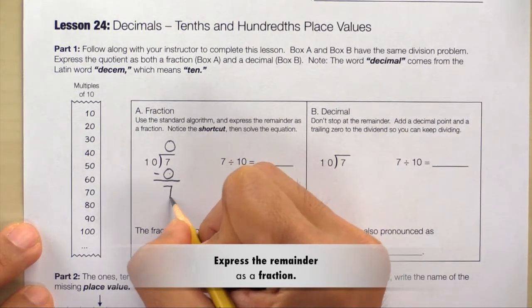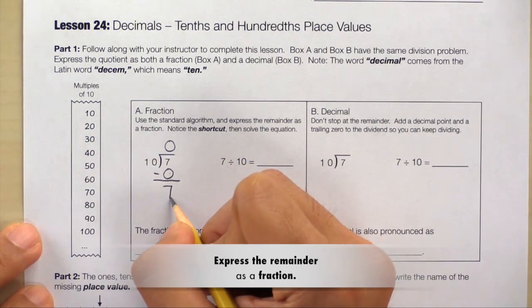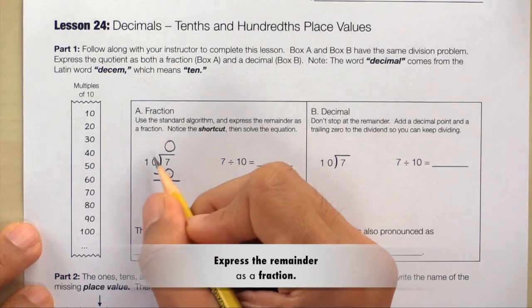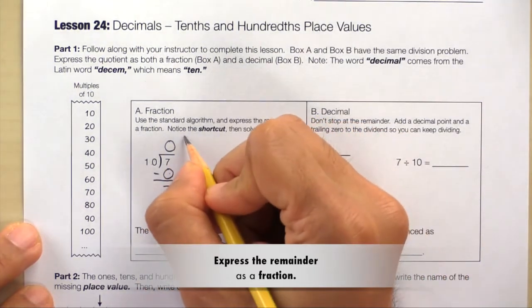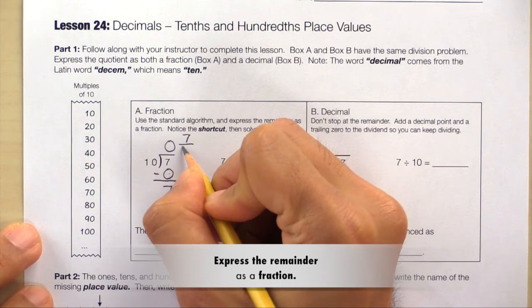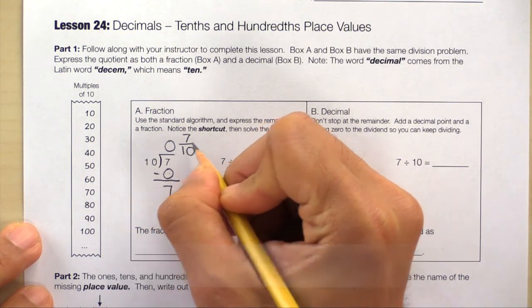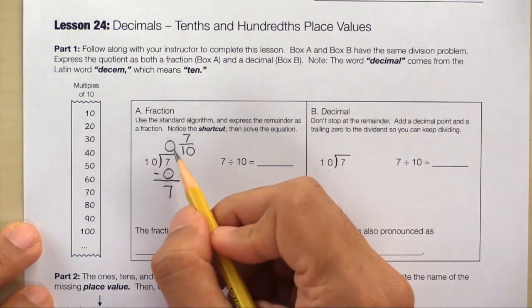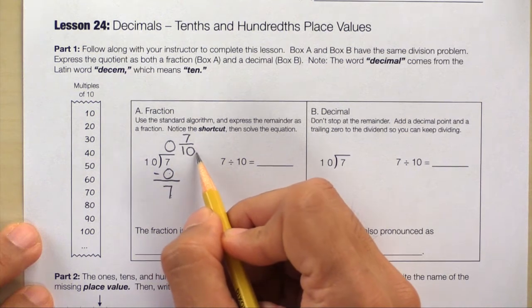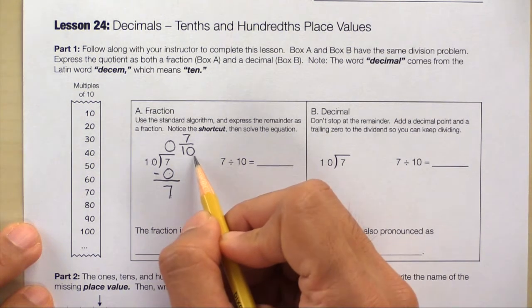And instead of writing this as a remainder the next step would have been 7 divided by 10. So write down 7 divided by 10. And as you can see our quotient is 0 and 7 tenths or just 7 tenths.